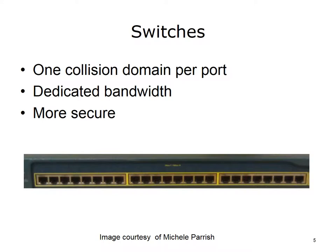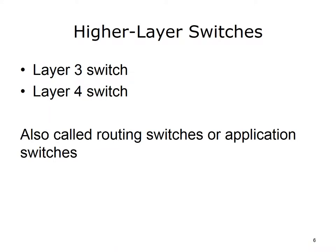Switches operate at layer 2, the data link layer, of the OSI model. There are more sophisticated switches that can operate at other layers in addition to layer 2. Layer 3 switches can interpret layer 3 network information, and layer 4 switches can interpret layer 4 transport information.